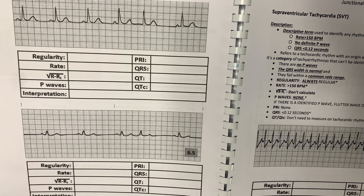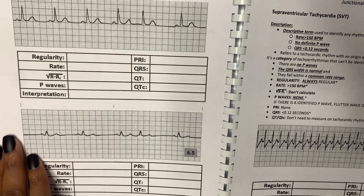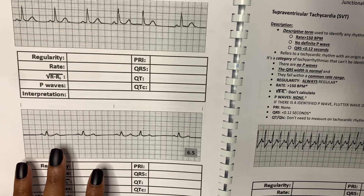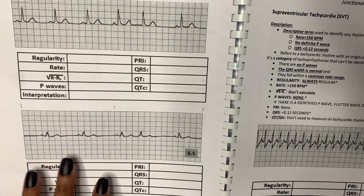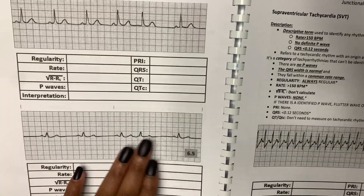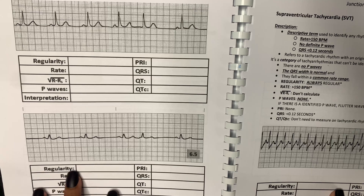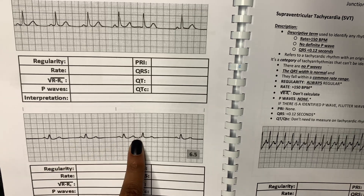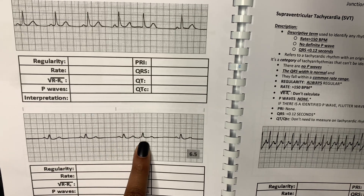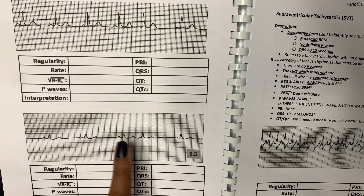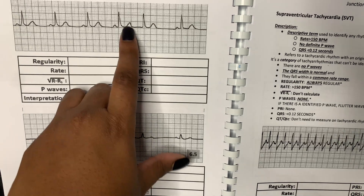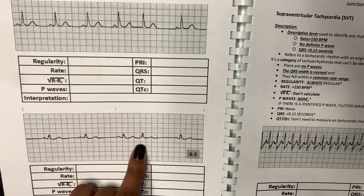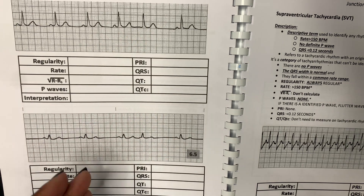You have to make sure you identify the underlying rhythm, because you don't want to mistake this as AFib or sinus arrhythmia just because you think it's irregular — because it's not. It's just that premature beat. For PJCs, they can happen before the QRS, during the QRS, and after the QRS. So it can hide within the QRS or come after it, which is why you might not see a P wave.